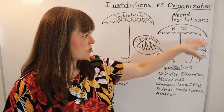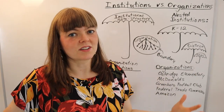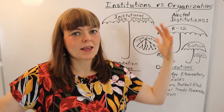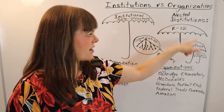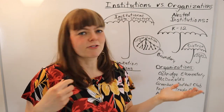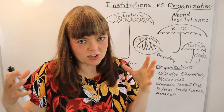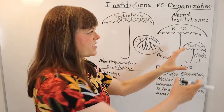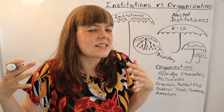Institutions can be nested. The K-12 system is a huge institution that includes generally how things work in kindergartens, sixth grade schools, and so on — people understand that wherever you go in the country, there's going to be a similar setup. But underneath that, you have the district, which is a sub-institution with its own rules and norms that may differ from a neighboring district. And then a particular school, which is certainly an organization, is nested under that.